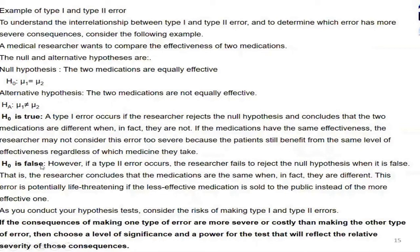Now, what is type 2 error? The null hypothesis is false — that is, the effectiveness of the two medicines is not the same. If the researcher made a type 2 error, that is, he mistakenly failed to reject the null hypothesis when it is false — he did not reject it, he accepted the null hypothesis — he said from his data that the effectiveness of the two medicines, mu1 and mu2, is the same, but they are not the same; they are different.